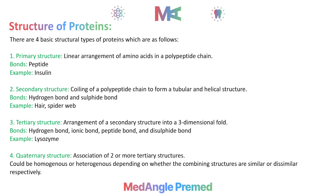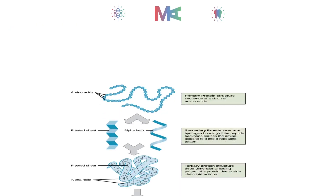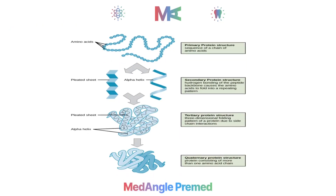An example of this fourth structure of protein is hemoglobin. Here is a diagram in which we have all 4 protein structures presented in diagrammatic form, showing the arrangement of all 4 structures as discussed.